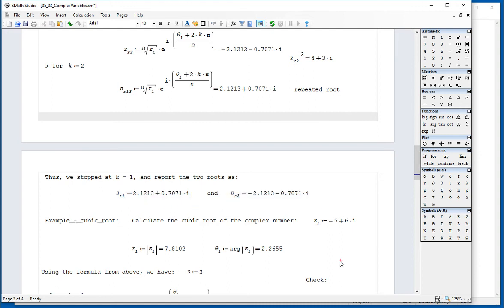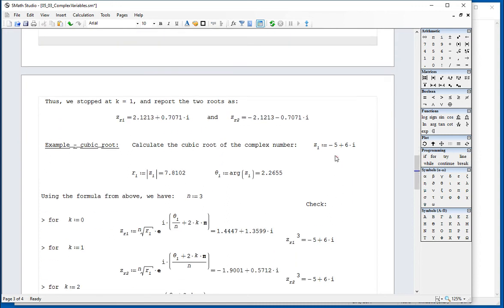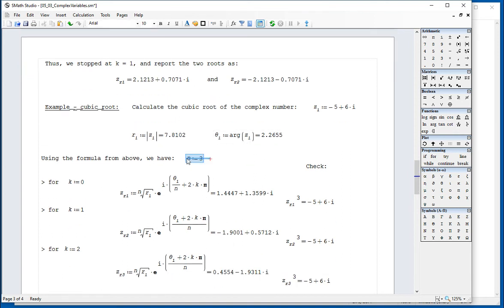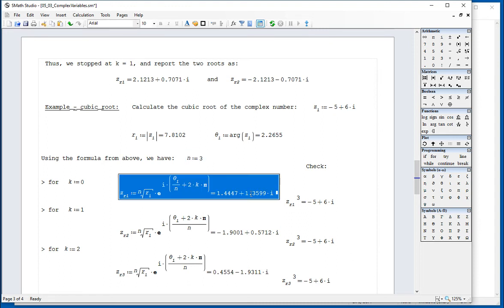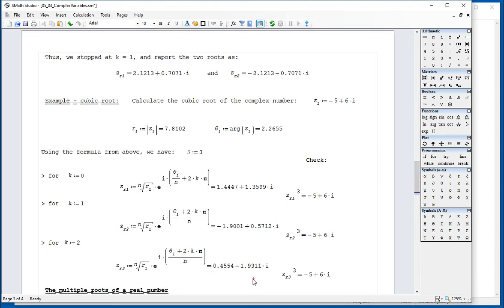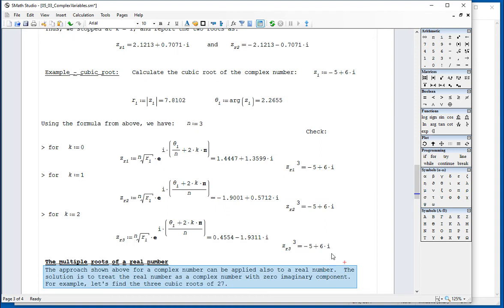And so now we go for another example, the cubic root of this quantity. Calculate the magnitude and the argument, and apply the formula. For n equals 3, I need to apply for 0, 1, and 2. And I'm getting this root, and this root, and this root. And when you raise them to the cube, you get this result.